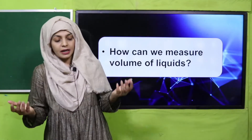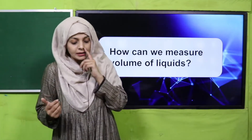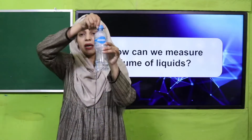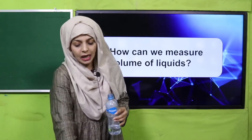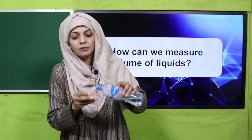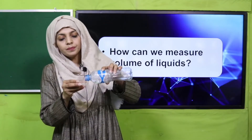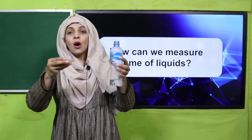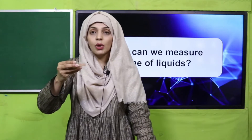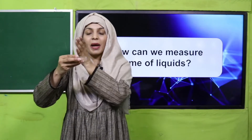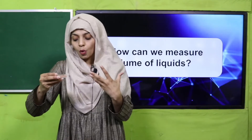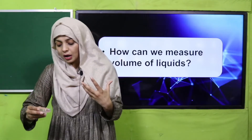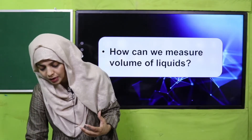Volume means the space an object occupies. For example, there is water in this bottle. If you pour it into a flat or open container, it spreads and takes up more volume. So in this way, we determine the volume — by observing how much space the matter occupies.